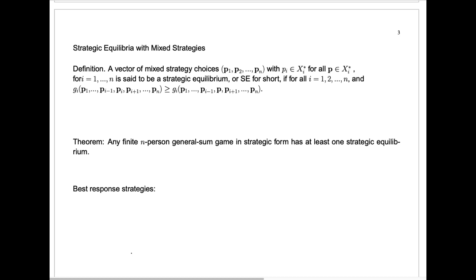When we talk about a strategic equilibrium, we don't just mean a pure strategic equilibrium — it could be what we call a mixed strategic equilibrium, or just a strategic equilibrium. A vector of mixed strategies P1 through Pn represents the probability vector P1 for player 1 in an n-player general sum game. Player 1 plays probability vector P1 over all of player 1's possible choices, player 2 plays probability vector P2, etc. Each P sub i is a probability vector in the set of choices for player i.